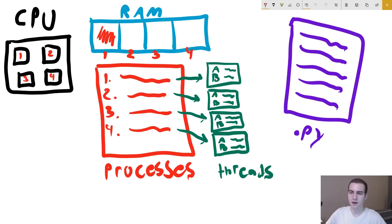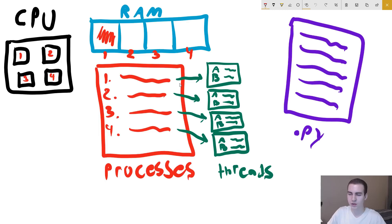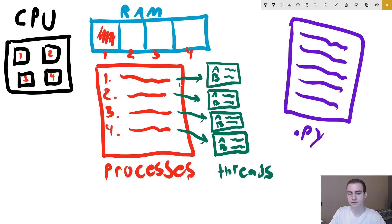I have a bunch of different things on the screen here — we're going to link these up and show how they work together. So we have this Python file, which is what we write as the programmer. We have some threads, some processes, our computer's memory, and a CPU. Just take note — this is a four-core CPU. So let's start with processes. We already know what a process is — essentially, it's a program that's running on our computer.